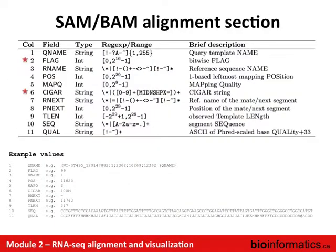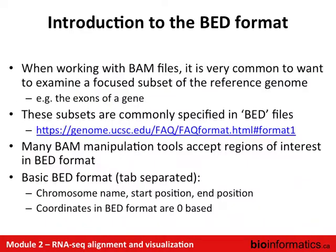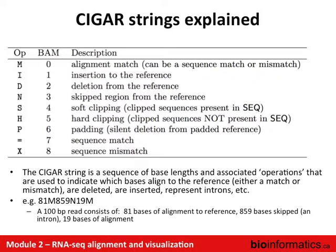CIGAR strings are another thing we set aside in the BAM file. Field six is a CIGAR string, which tells you about the alignment. When you do your primary alignments, they'll be set to not-duplicate or unknown, and then when you run a separate tool like Picard MarkDuplicates, it'll go back, edit the BAM file, and change those flags wherever appropriate.